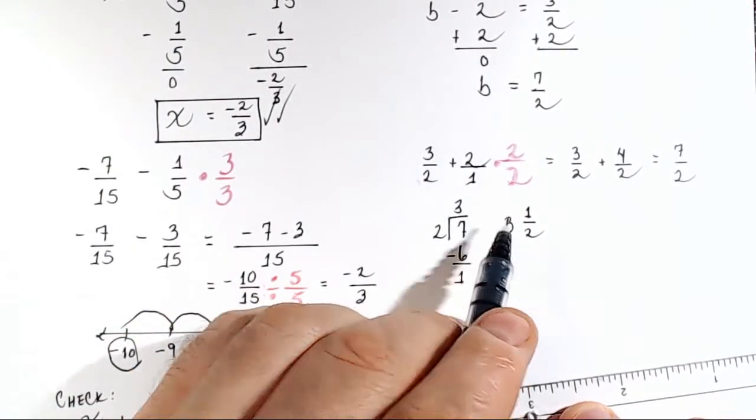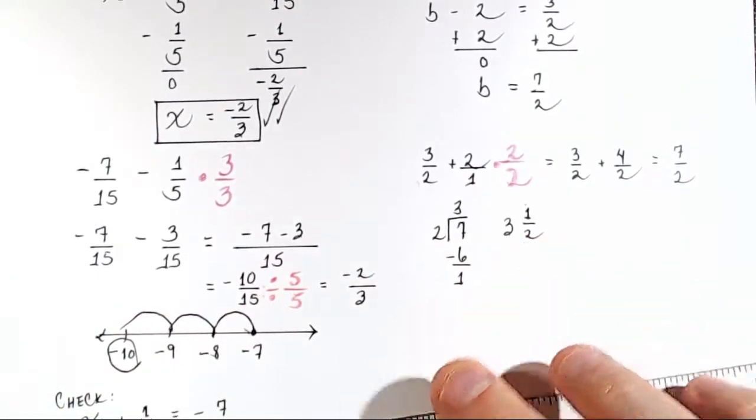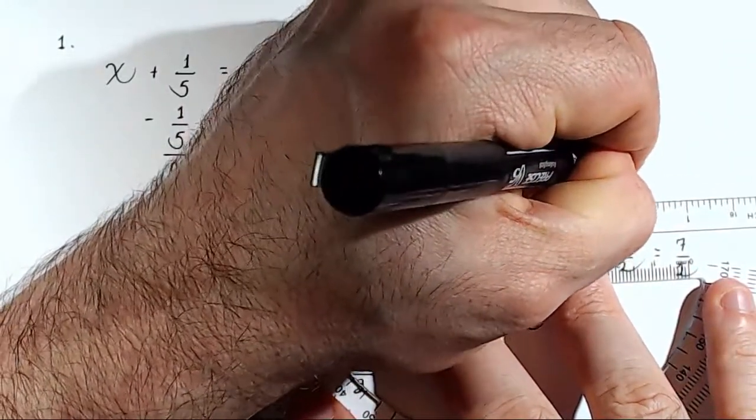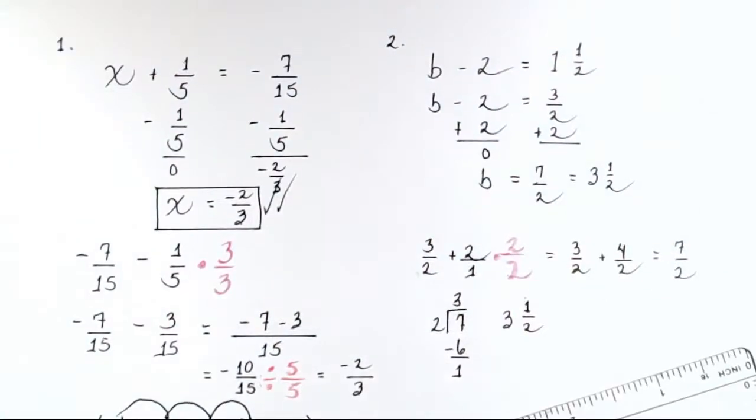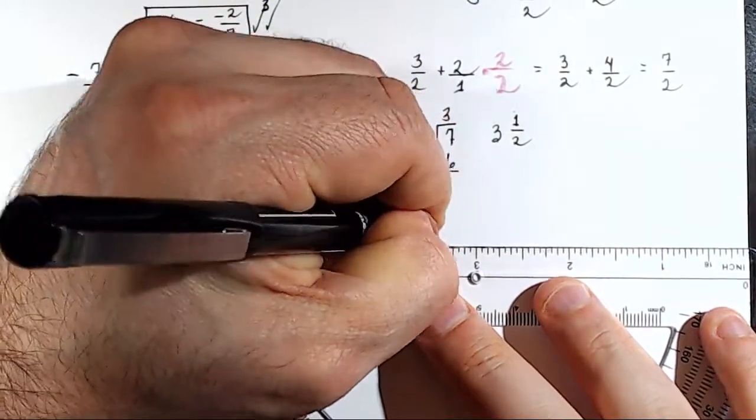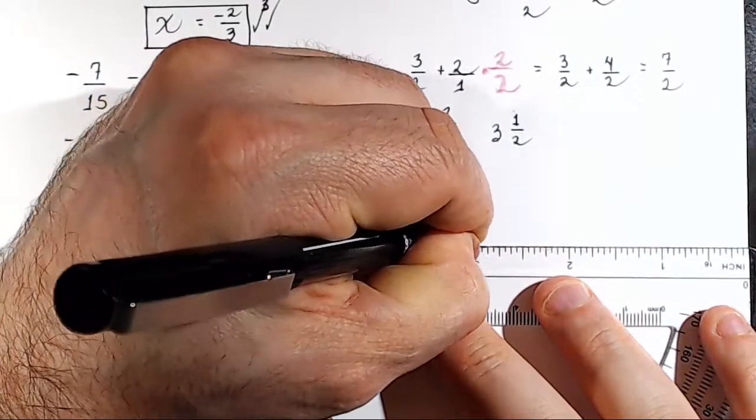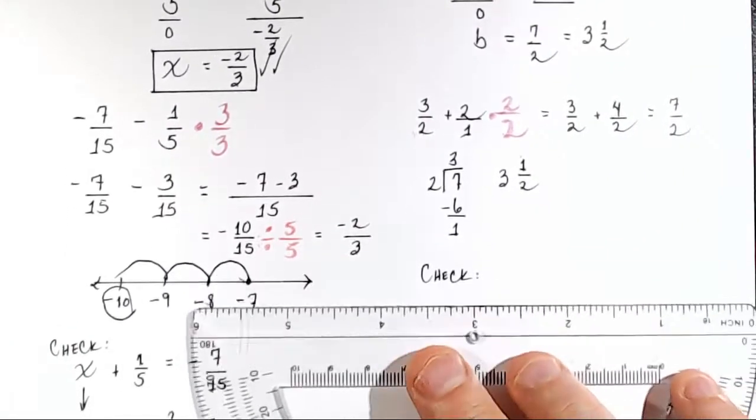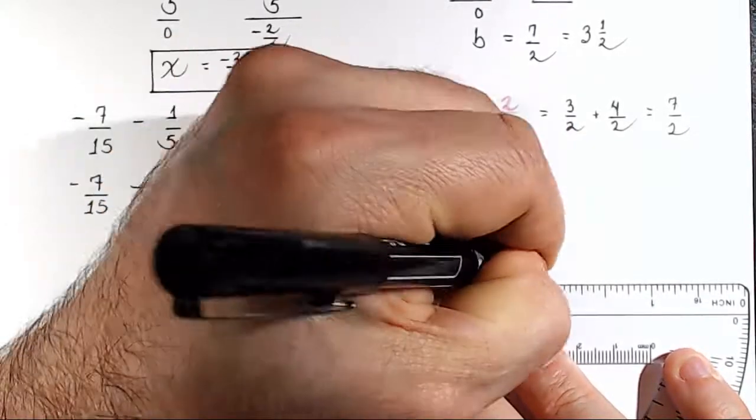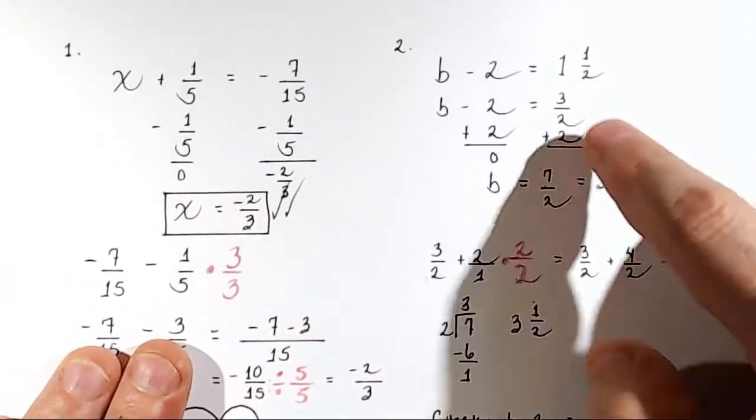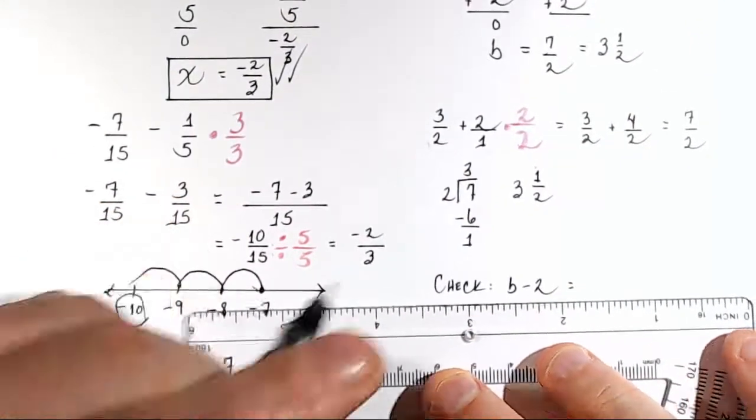So we think that B is equal to 7 halves, which is equal to 3 and 1 half. That's our conjecture. So we're almost ready to write a box around it, but we've got to check. So let's go down here and let's do our check. First, let's rewrite the problem. B minus 2 equals 1 and 1 half. B minus 2 equals 1 and 1 half, which we said was 3 over 2. So we'll just write B minus 2 equals 3 over 2.